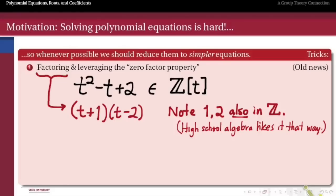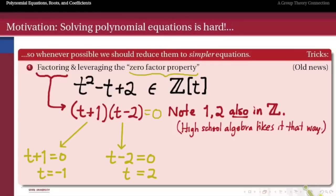We'll see this semester that we can actually do a little better than that. But once we have it factored, the zero factor property lets us set each factor equal to zero and solve those much simpler equations for t. It gives us two roots: t equals negative one and t equals two.